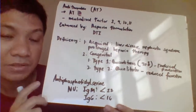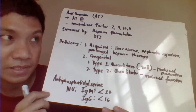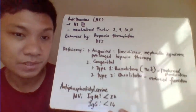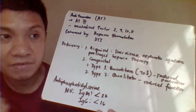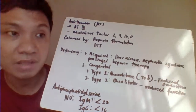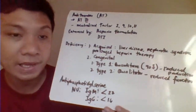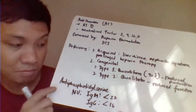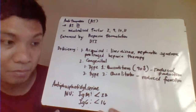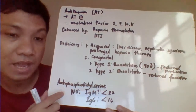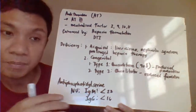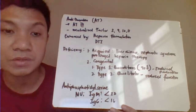Another antiphospholipid antibody is anti-phosphatidylserine, which is more specific. It can diagnose lupus anticoagulant in SLE patients even when anti-cardiolipin antibody, lupus anticoagulant, and anti-β2GPI antibody are all negative. Normal reference: IgM less than 22 units, IgG less than 16 units. Results above these values indicate thrombosis.